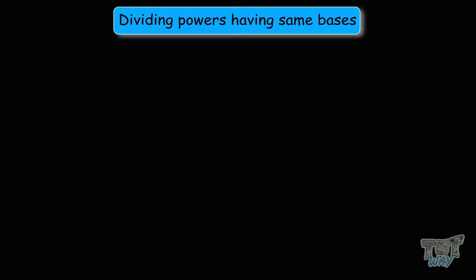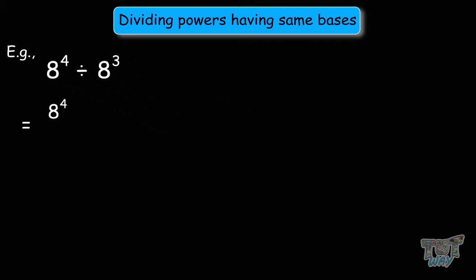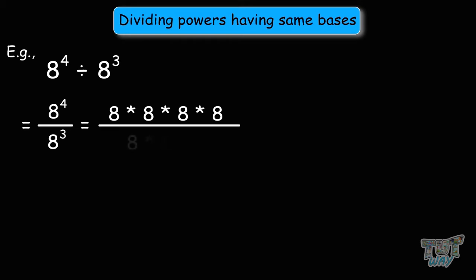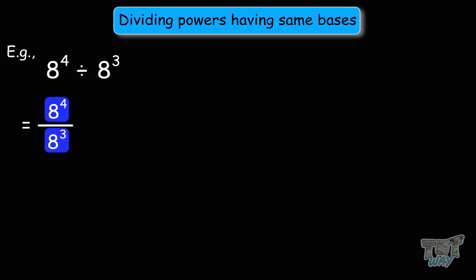Now let's learn how to divide powers with the same bases. 8 to the power of 4 divided by 8 to the power of 3 — we can expand them: 8 to the power of 4 is 8 times 8 times 8 times 8, and 8 to the power of 3 is 8 times 8 times 8. We cross out 3 eights from top and bottom, leaving one 8. So the answer is 8. Using the law of exponents: 8 to the power of 4 minus 3 equals 8 to the power of 1, which is just 8. We subtract the powers when dividing powers with the same base.